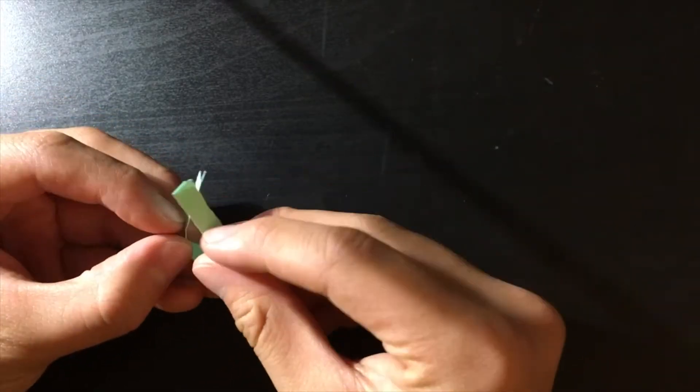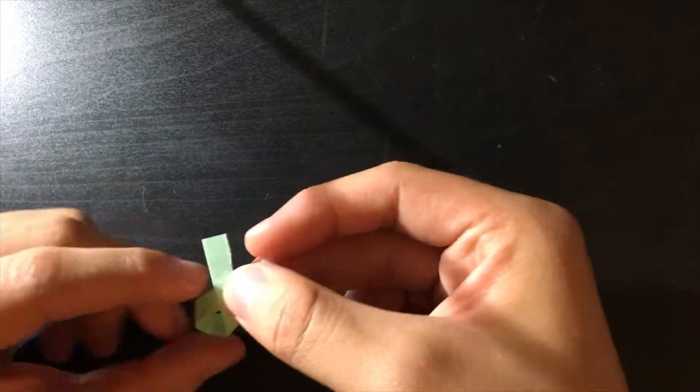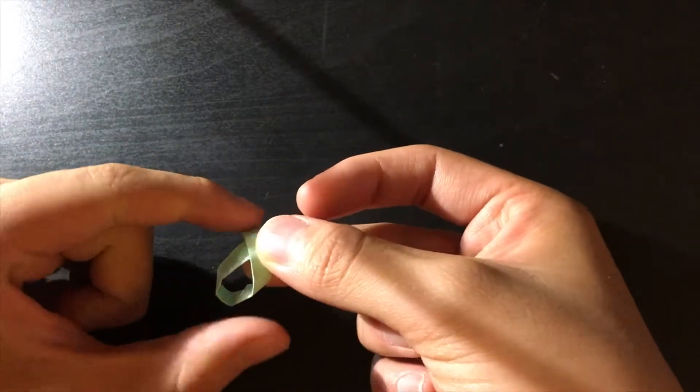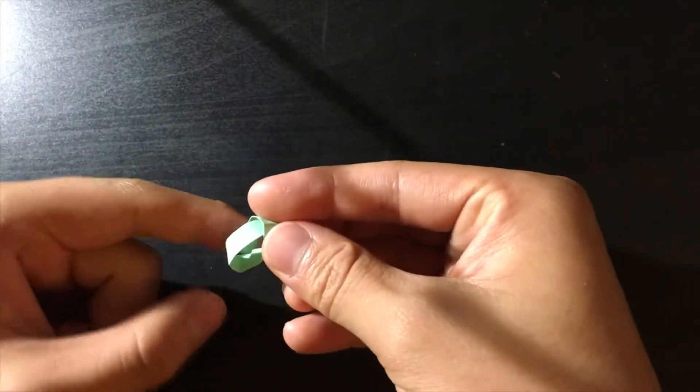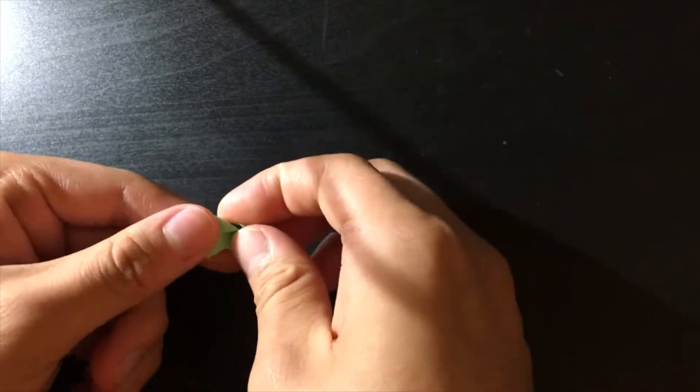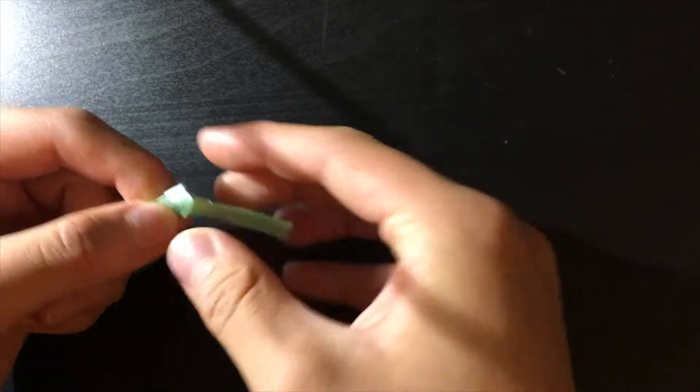We're going to make a simple knot. If you folded paper stars, you probably know this process, so bring the two ends on top of each other. Take the top end and pass it through the loop at the bottom, and then pull on the two ends to tighten.